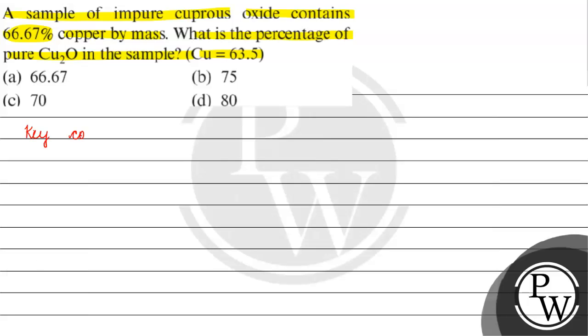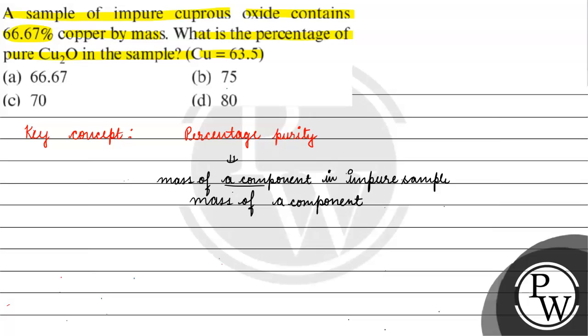The key concept for this question is percentage purity. Let's talk about percentage purity. Basically, percentage purity equals mass of a component in impure sample by mass of a component in pure sample into 100.